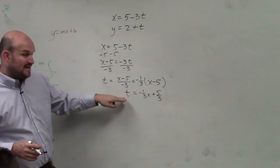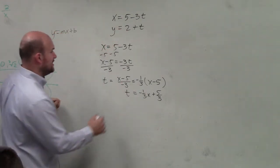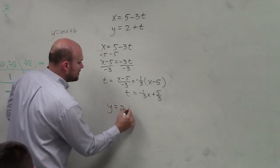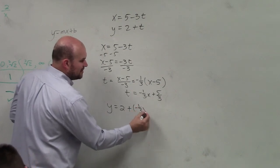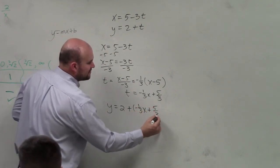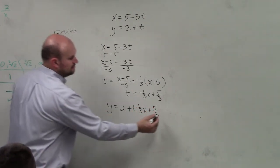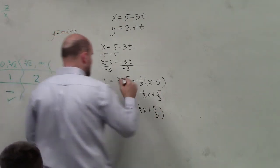Now I'm going to take the value of t and plug it into my other equation. y equals 2 plus what my t is equal to: negative one-third x plus five-thirds. Like substitution in systems of equations.